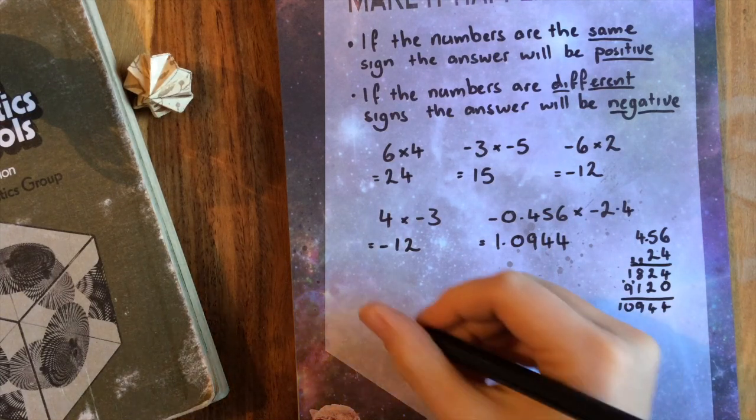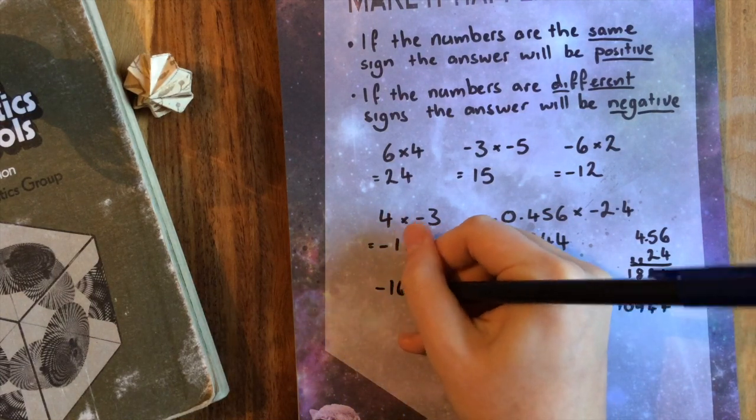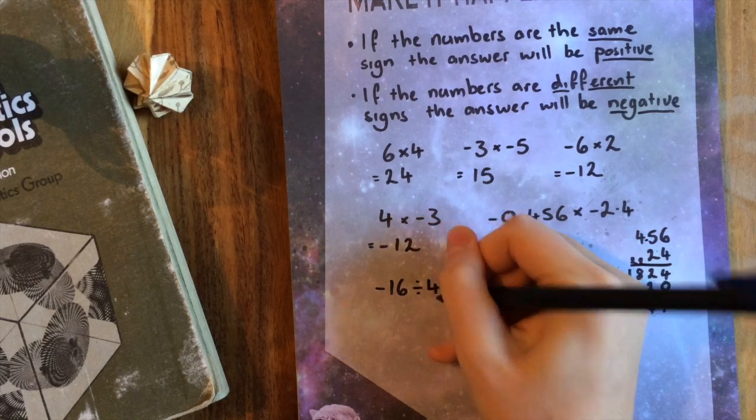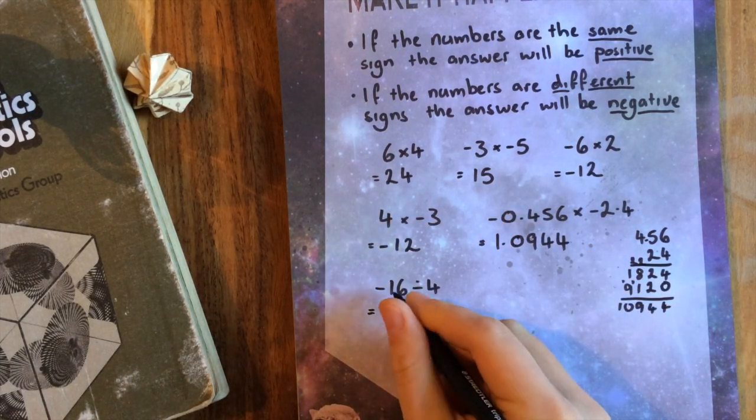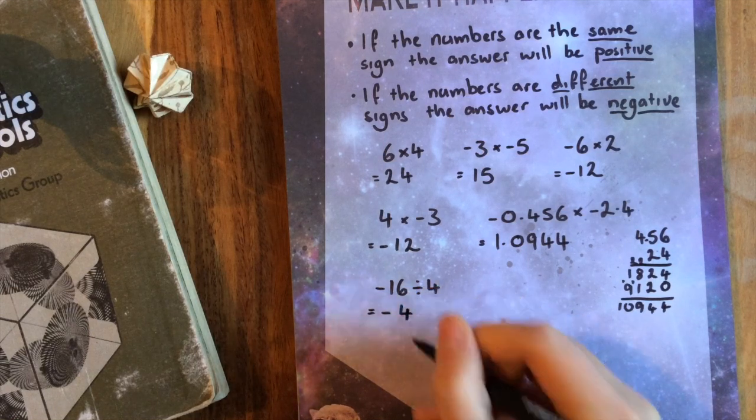And for division, it works exactly the same. Negative 16 divided by four, different signs, the answer is going to be negative. 16 divided by four is four.